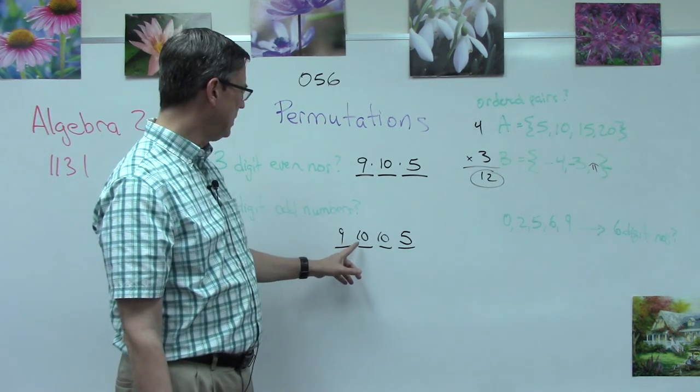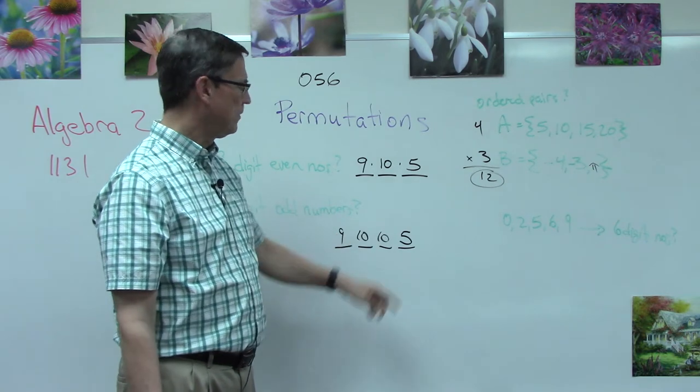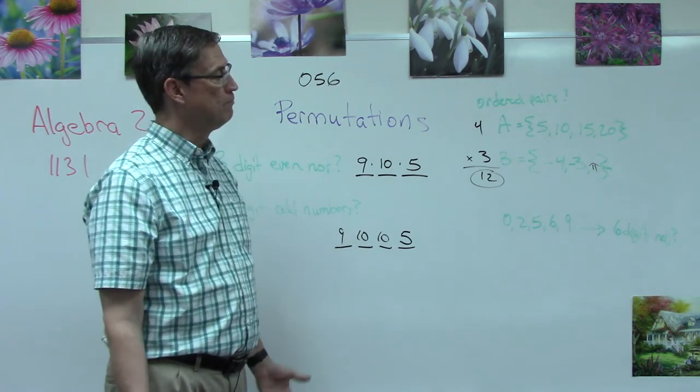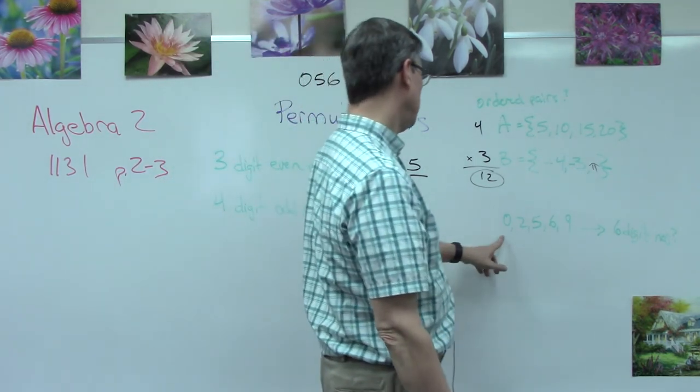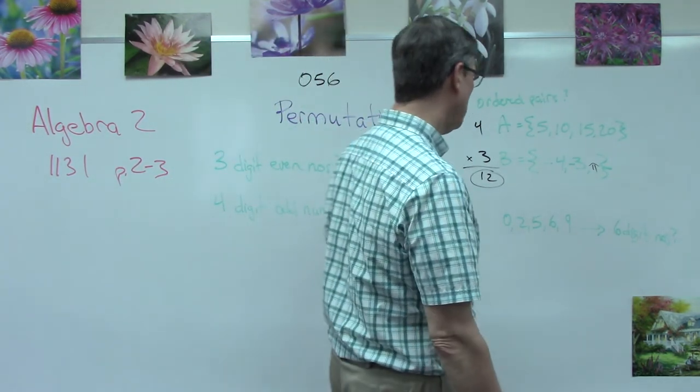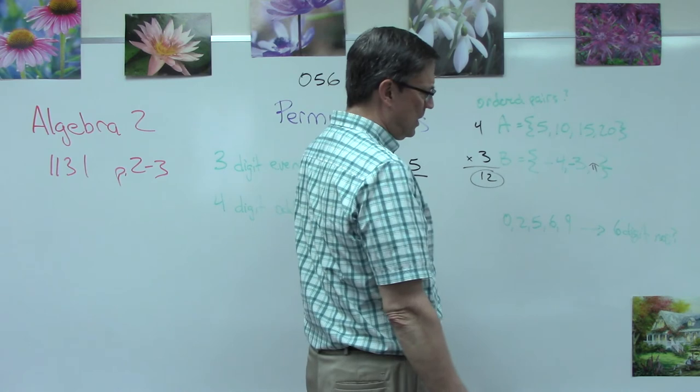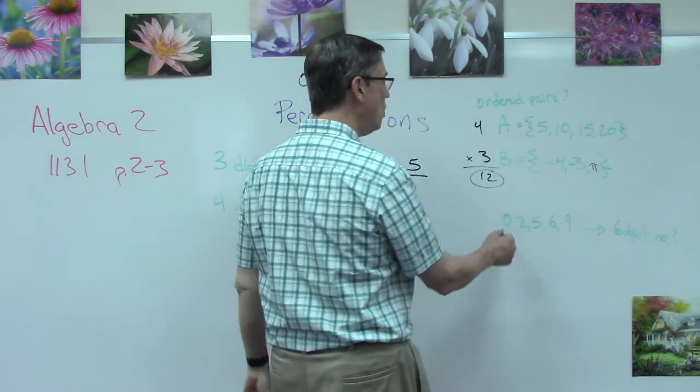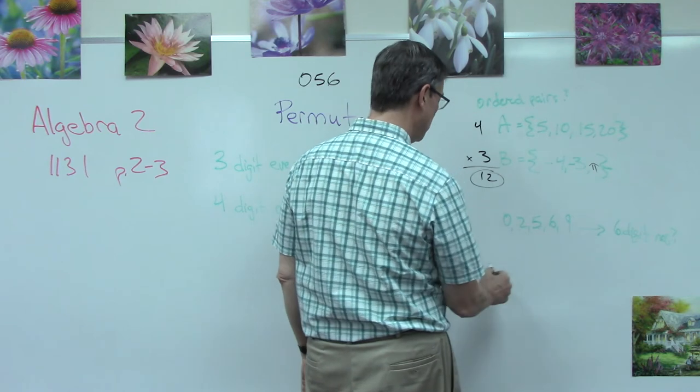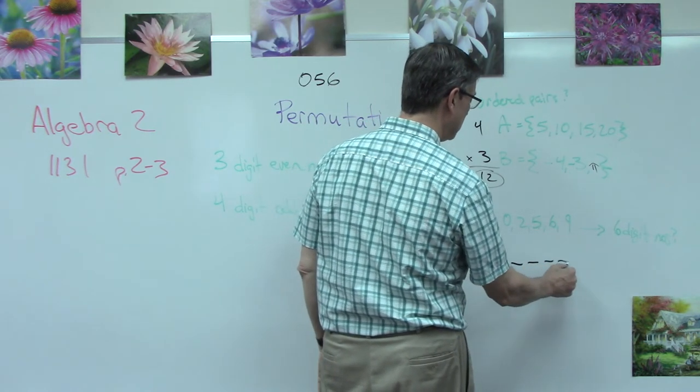Let's think about this one: how many six-digit numbers could I make using only these digits: one two three four five six? One two three four five six.